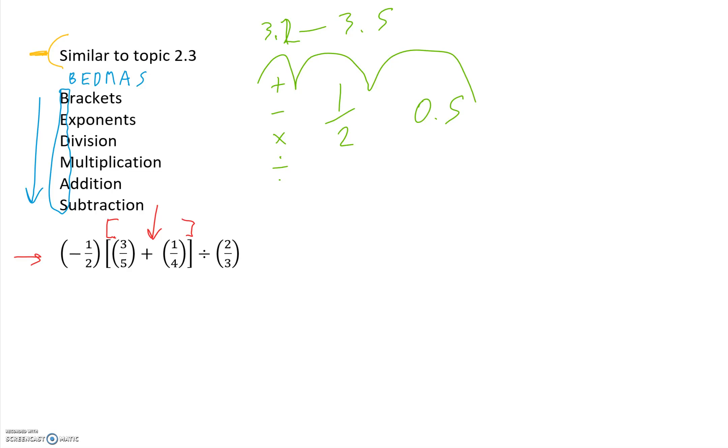From topic 3.2, the addition of these fractions, we have to get common denominators first. So 3 times 4, 5 times 4, plus 5 times 4, and 1 times 5. If we multiply it out, we have 12 over 20, plus 5 over 20.